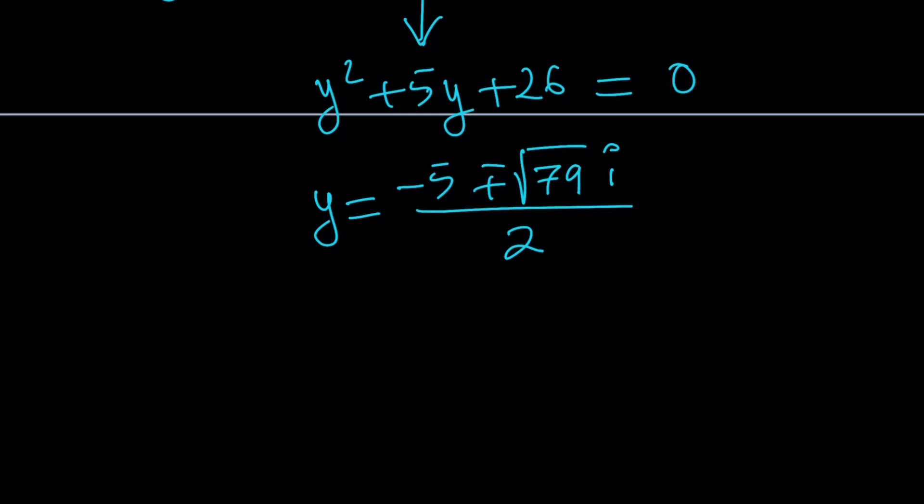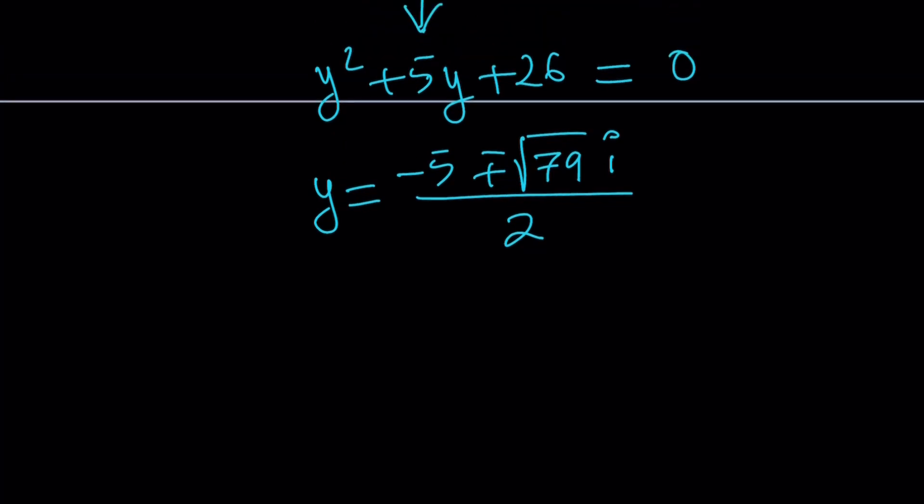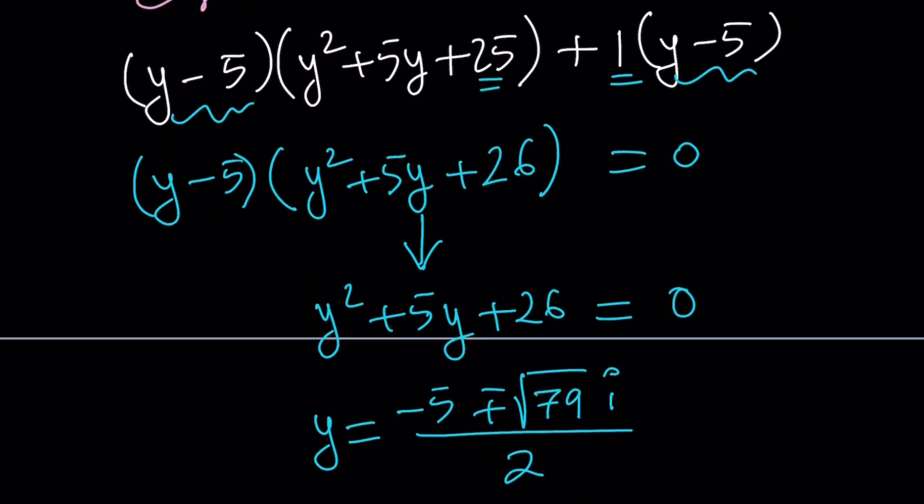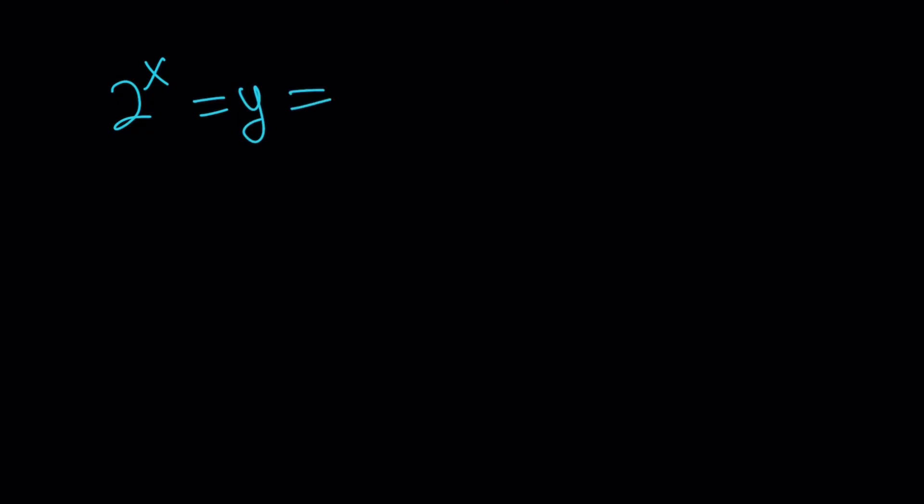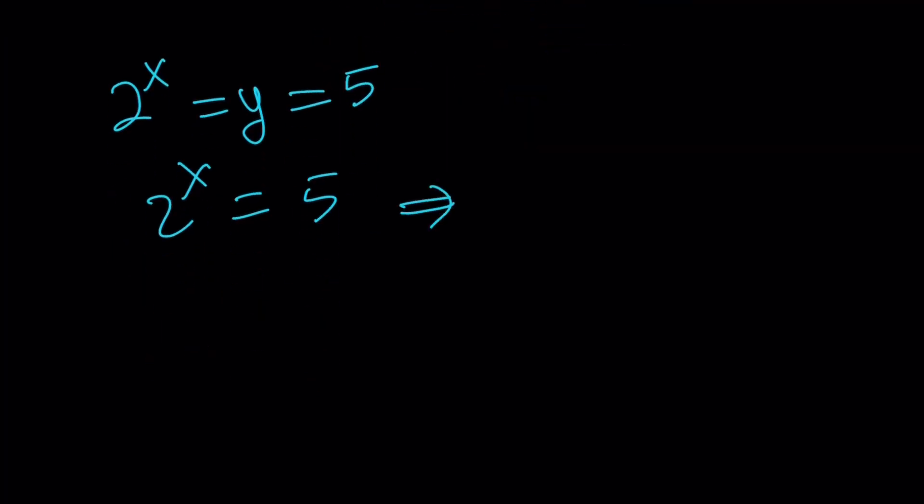But we're not looking for the y values, right? We're looking for the x values. What is x? Let's go ahead and take a look at the x values. So to find the x values from the y values, we have to go back and back substitute. Remember, 2 to the power x equals y. And we know that one of the values of y is y equals 5. So if you set 2 to the x equals 5, from here you get x equals log 5 with base 2. Or you can ln both sides if you want. How about natural log? I like that better. Move the x to the front. x ln 2 equals ln 5. And from here, x is going to be ln 5 over ln 2.